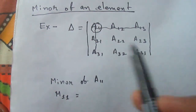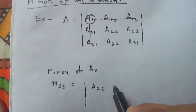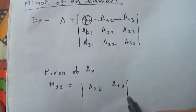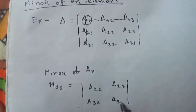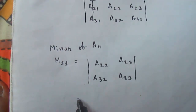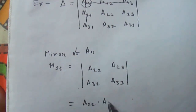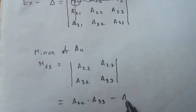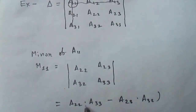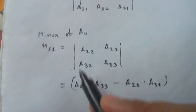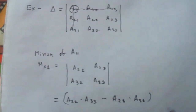Now to calculate the minor of a11, we expand the remaining determinant: |a22 a23 / a32 a33|. So it becomes a22 × a33 − a23 × a32. This is the minor of a11.